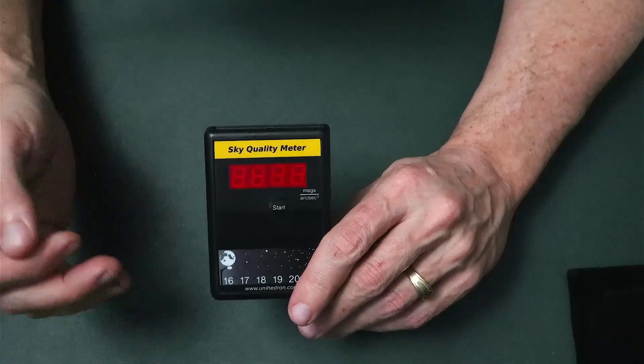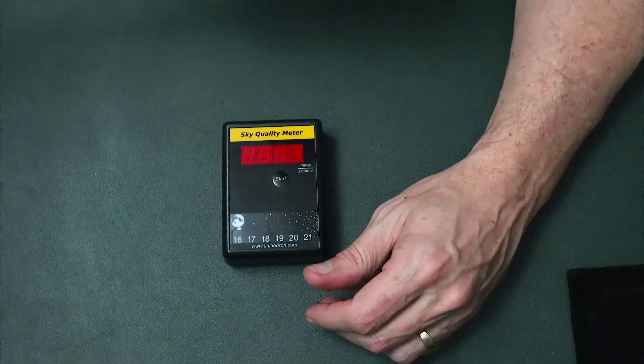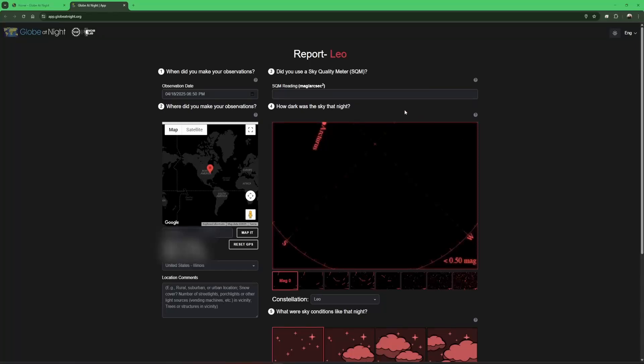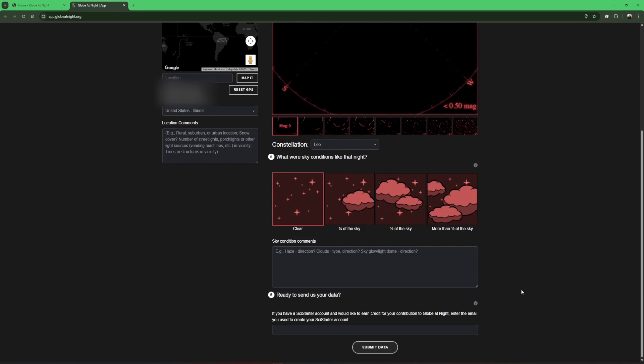Real quick, we'll jump over to the website. Just to show you, I'll leave the link down in the description, but you see right here: SQM reading. This is where you enter in the measurement, your average measurement that you took that night with the date and so forth, and then submit your data.